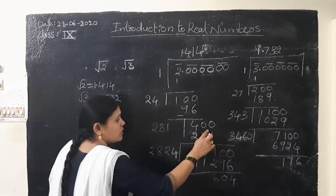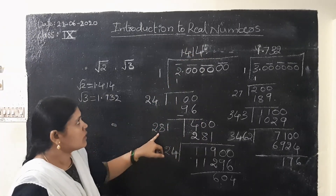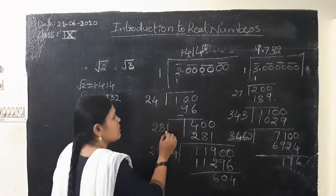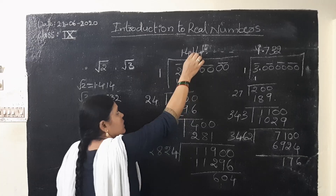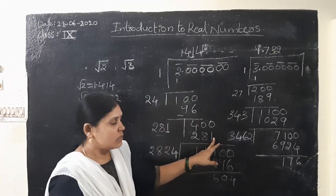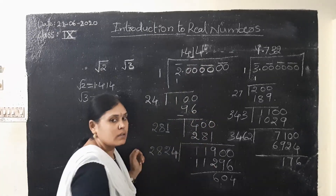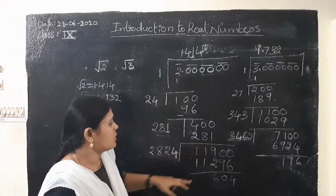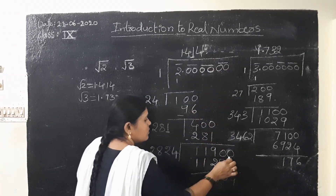Again two places straight down — it became 400. Here, what came? 14. 14 into 2 is 28. Again 28. After that, what number we have to keep — same number in the ones place of this divisor and in this quotient, same number we have to keep, and both we should multiply and take down here. 281 into 1 is 281. After that it won't go. If you take 282 into 2, it will become more than 400. So that's why we are keeping 1 here. 281 into 1 is 281. After subtracting we will get 119.